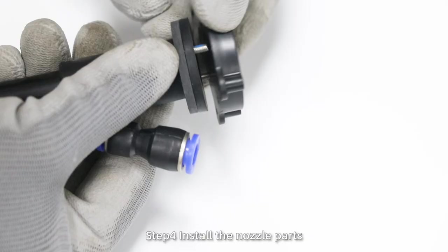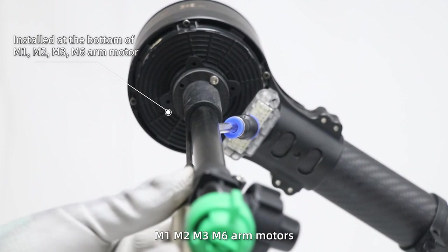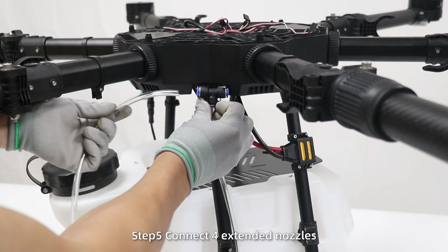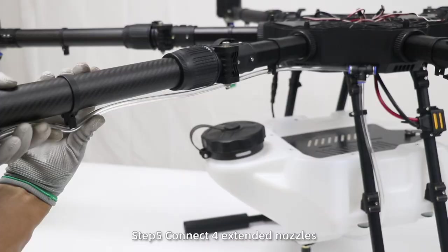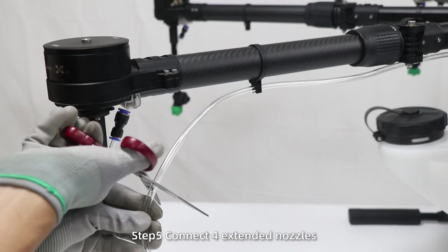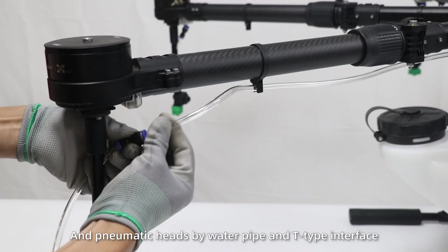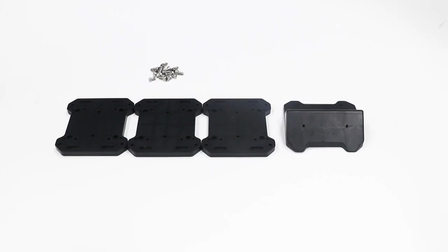Step 4: Install the nozzle parts and then place them on the bottom of the M1, M2, M3, and M6 arm motors. Fix the screws. Step 5: Connect four extended nozzles and pneumatic heads by water pipe and T-type interface.